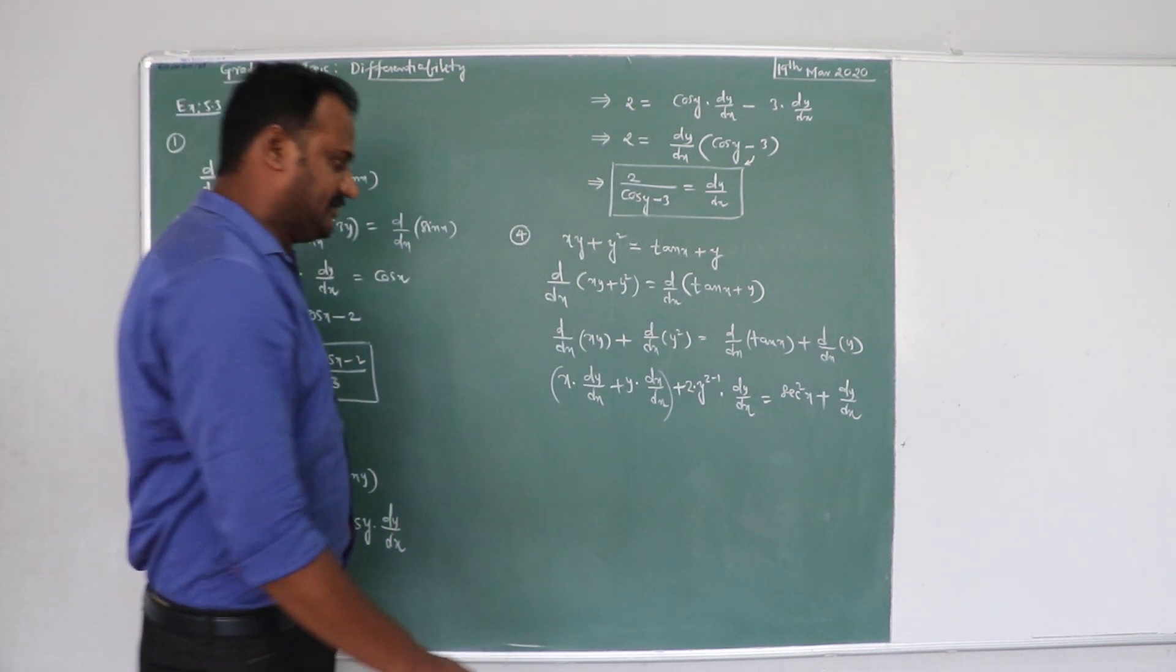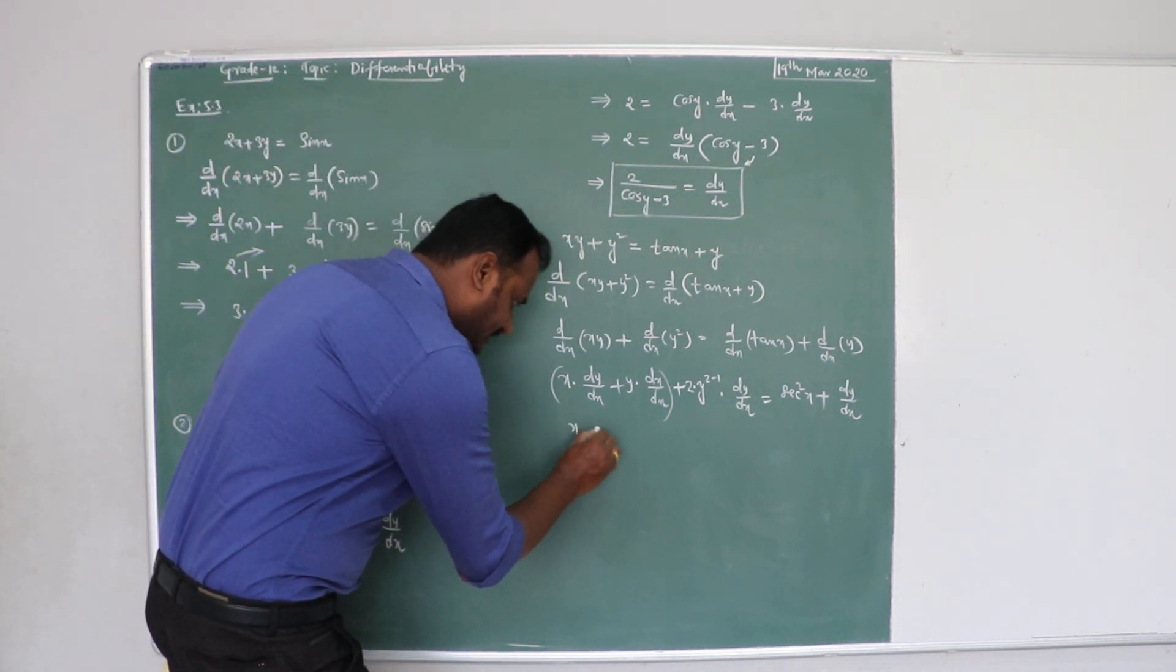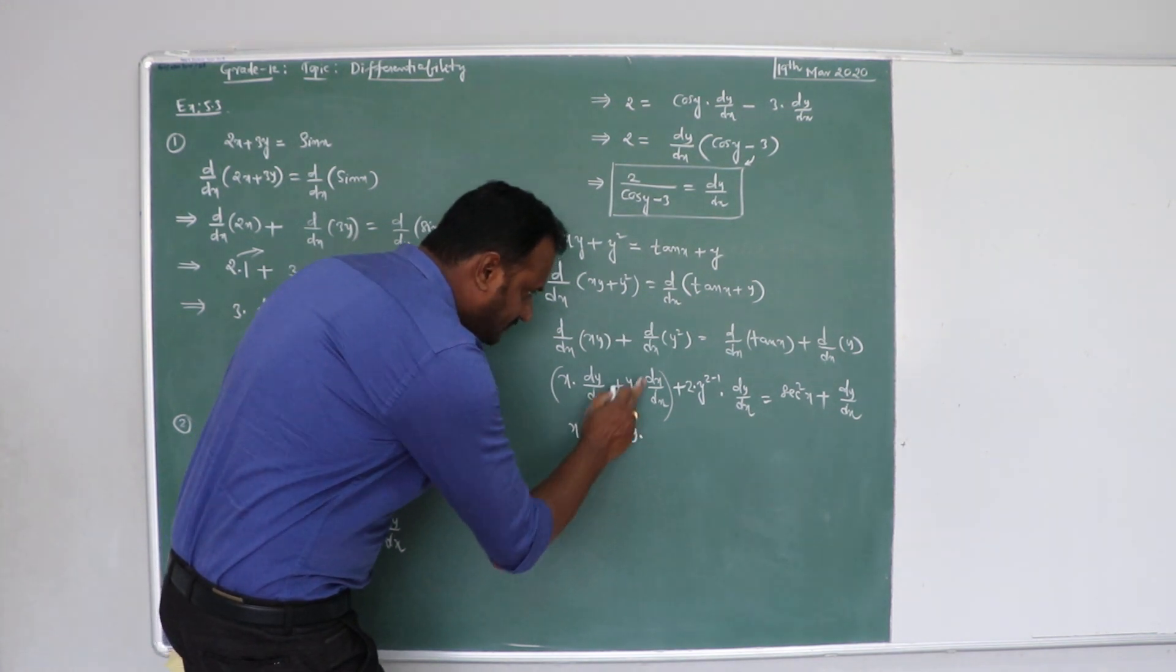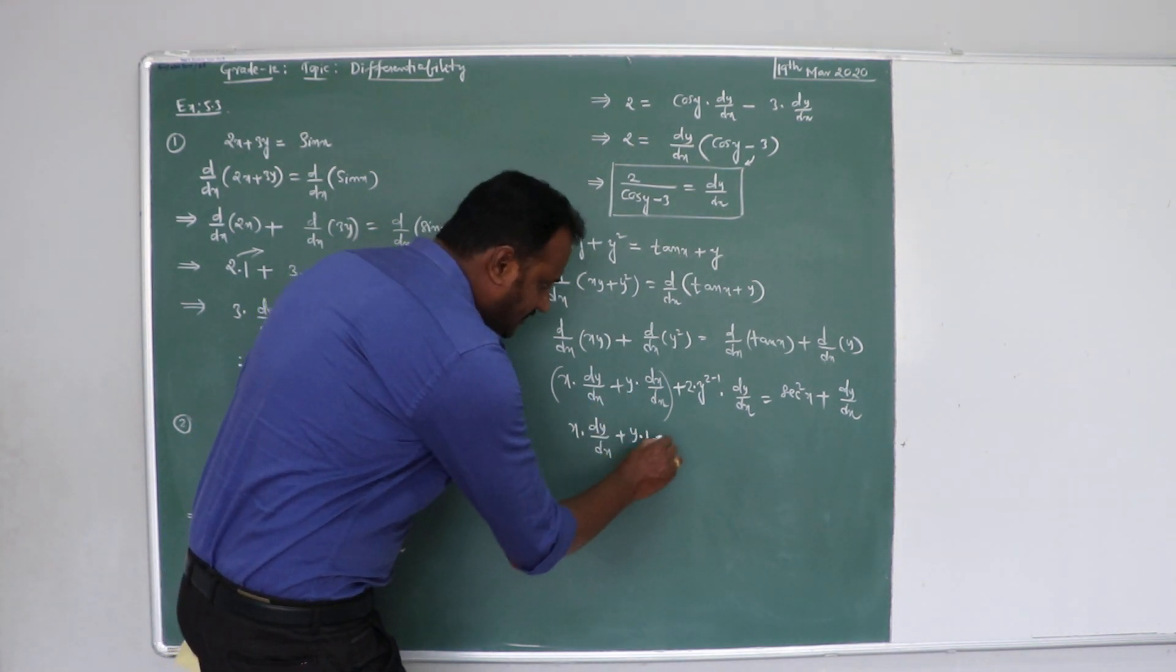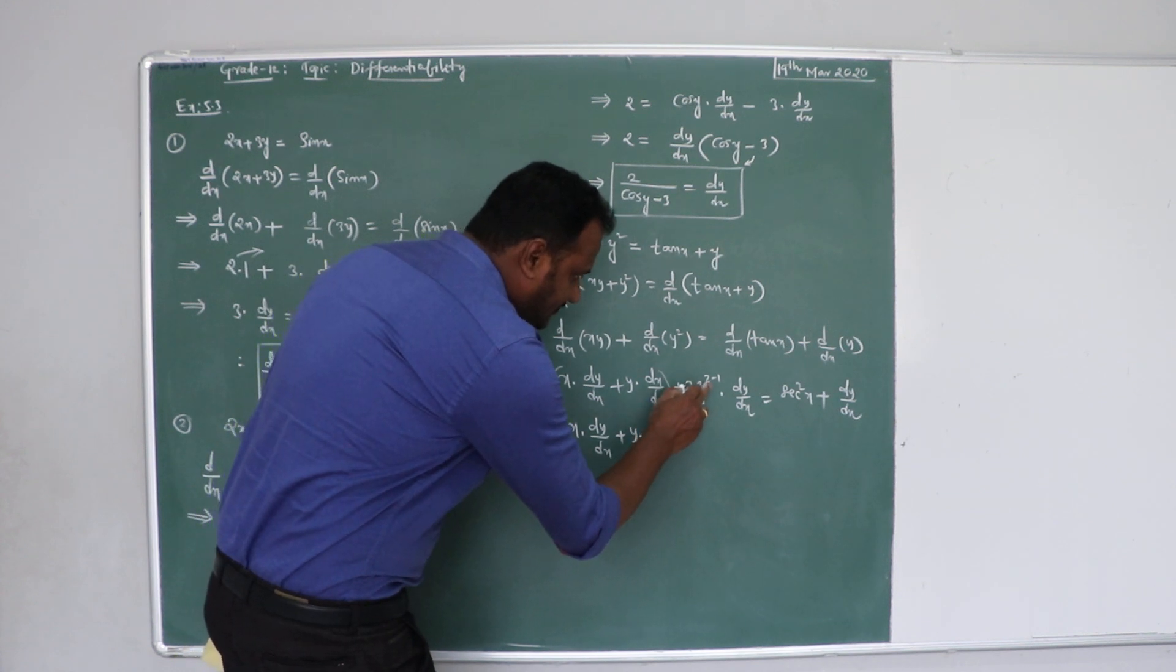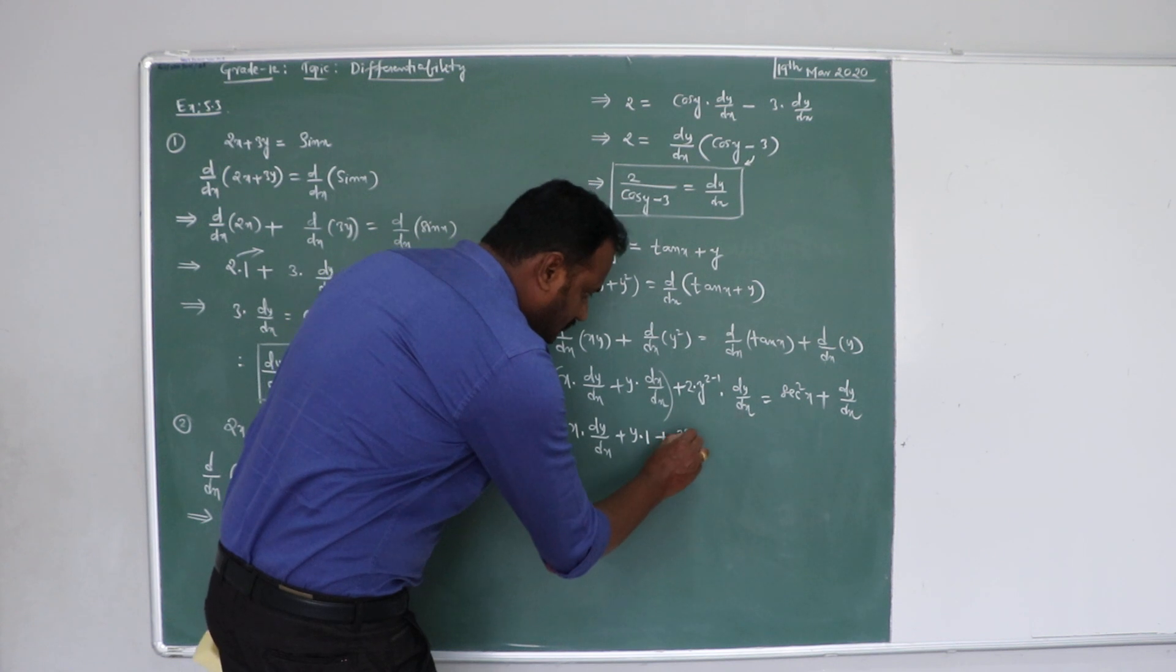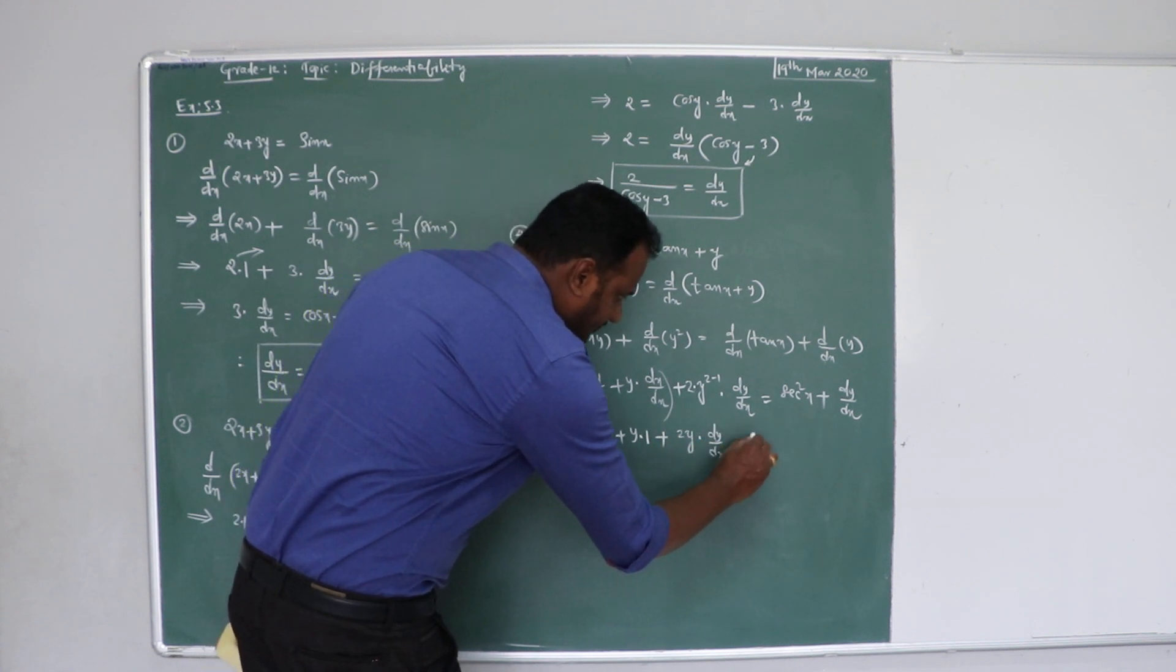Hope you understand that it is going to be x dy by dx plus y into dx by dx is equal to 1, plus y to power 2 minus 1 is equal to 1, y power 1 is equal to 1, 2 into y is 2y into dy by dx.